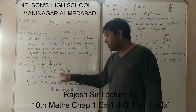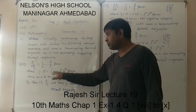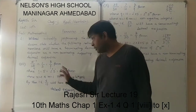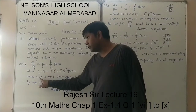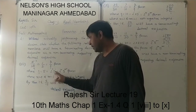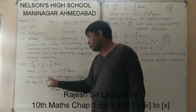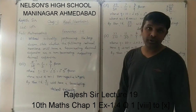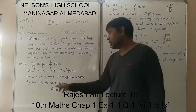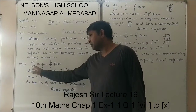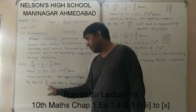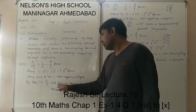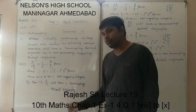This can be written in the form 2 raised to n times 5 raised to m. Here n equals 0 and m equals 1. Both n and m are non-negative integers. So by Theorem 1.6, the given fraction 6 upon 15, since it is in the form 2 raised to n times 5 raised to m, will have a terminating decimal expansion.